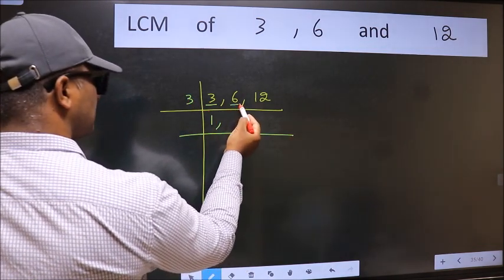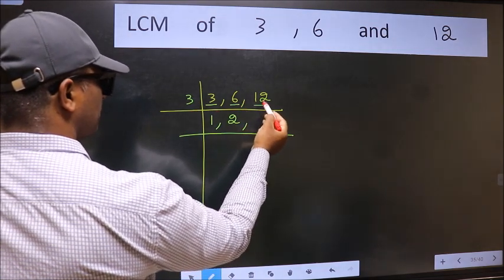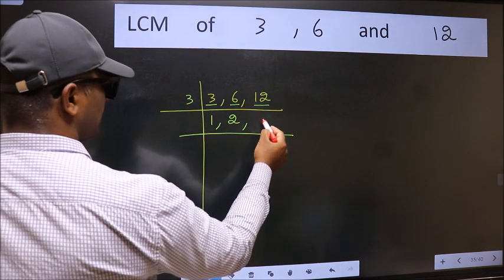The other number 6, when do we get 6 in 3 table? 3, 2 is 6. The other number 12, when do we get 12 in 3 table? 3, 4 is 12.